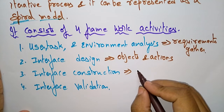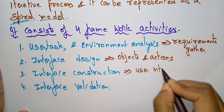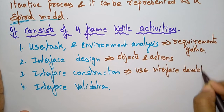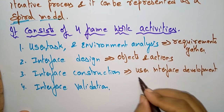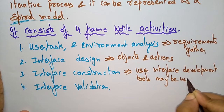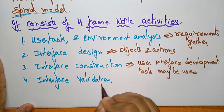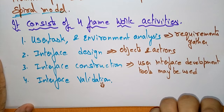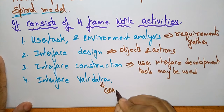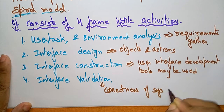Next is interface construction — after designing, we have to construct. In this construction framework, user interface development tools may be used. Finally, the last activity is interface validation, where the correctness of the system is validated.